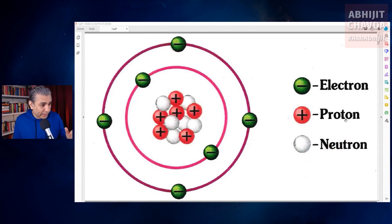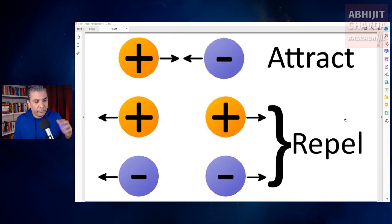Protons have a positive electric charge, neutrons have no charge, and electrons have a negative electric charge. We find that opposite charges attract each other, and similar charges repel each other.